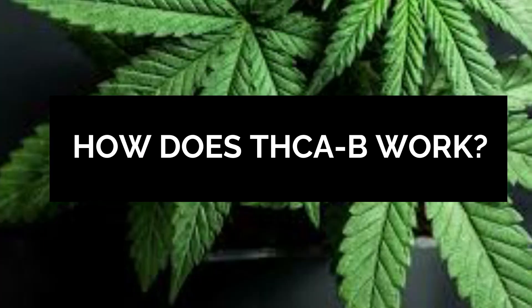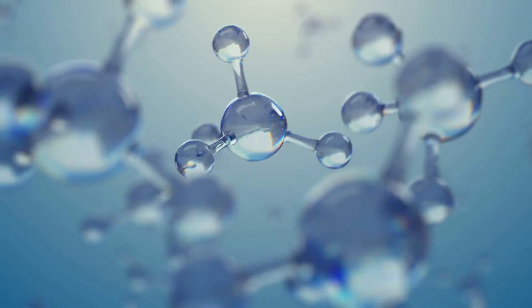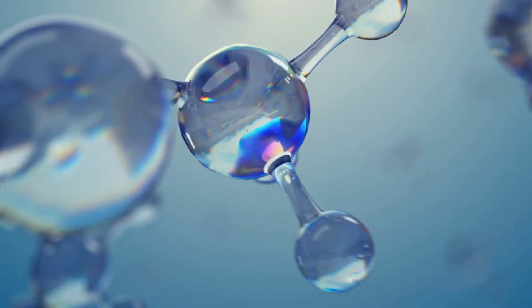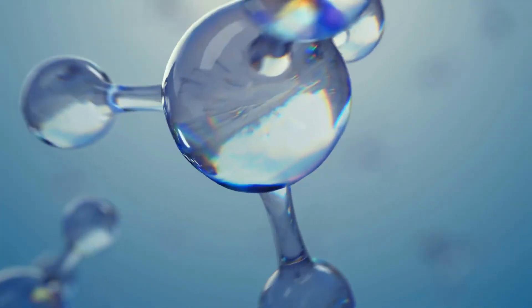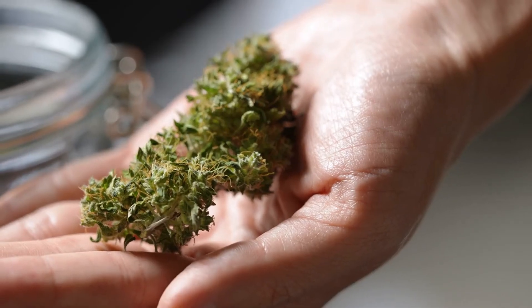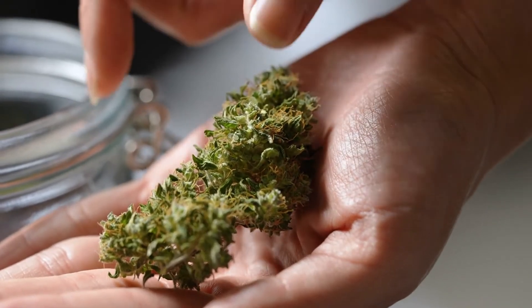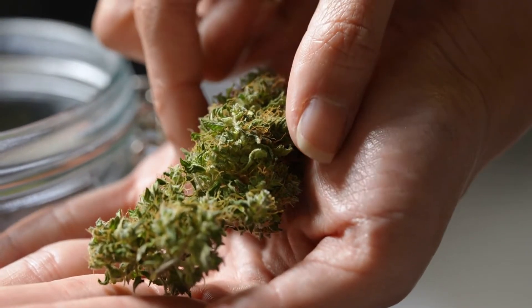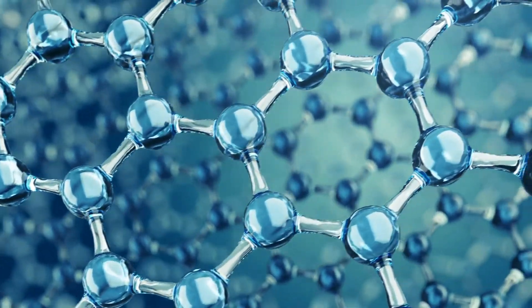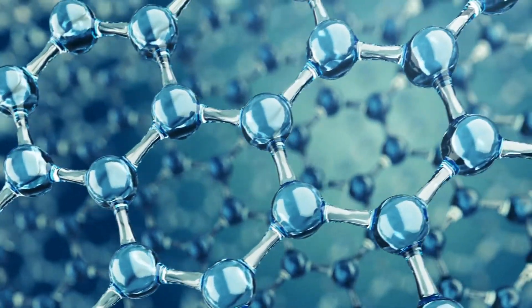How does THCAB work? Due to the extra acid group of THCA, the molecule does not attach to CB1 cannabinoid receptors as THC does. This is why THCA doesn't give a psychoactive effect. THCA, however, attaches to the TRPM8 receptor.